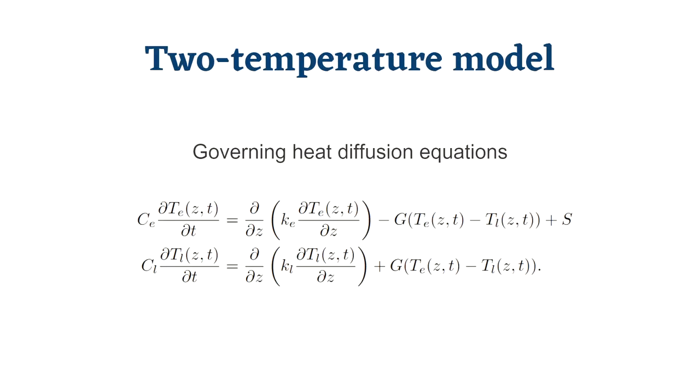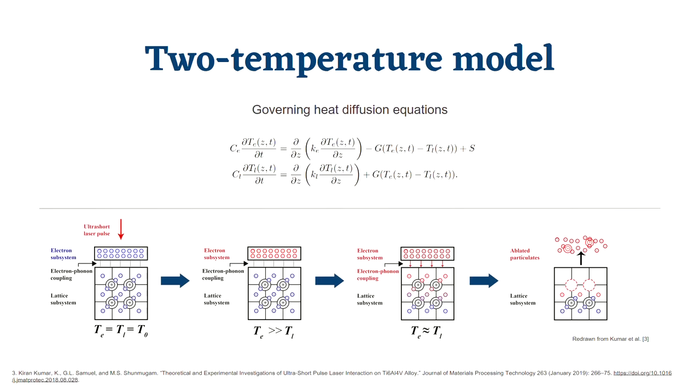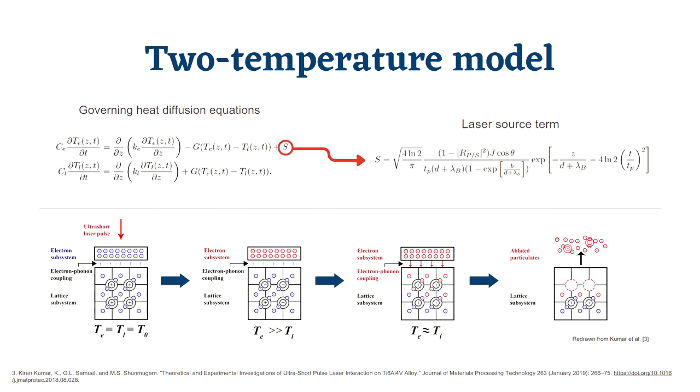The two-temperature model is employed to numerically simulate the FSPLA process, capturing the thermalization dynamics of the material through changes in the electron and lattice temperatures. The laser source term is modified to account for the dynamic angle of incidence and type of linear polarization.